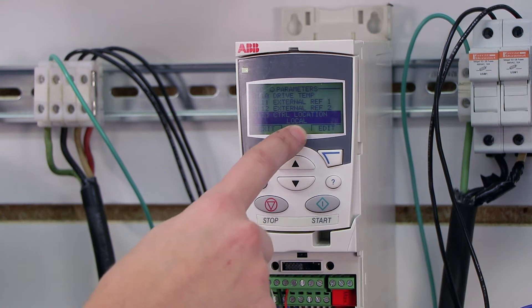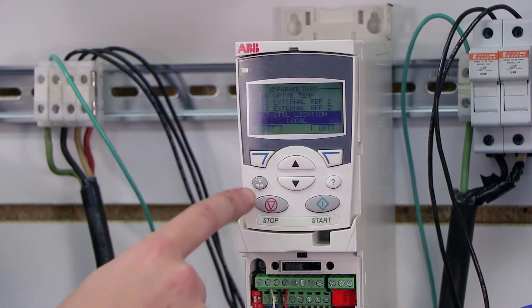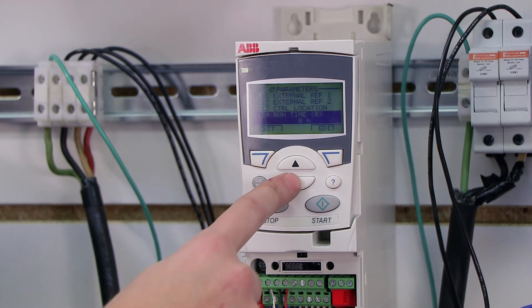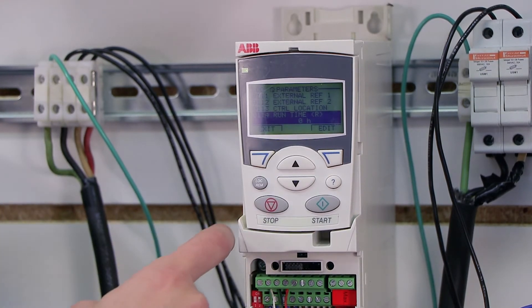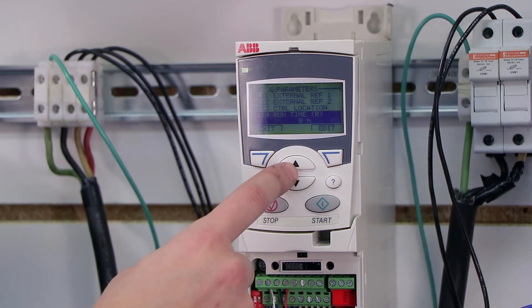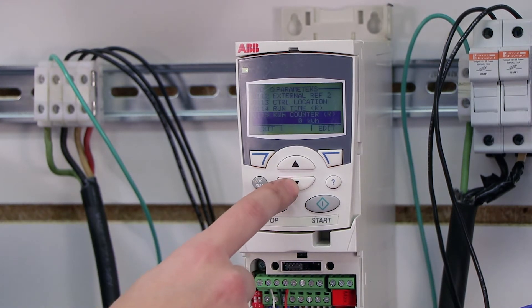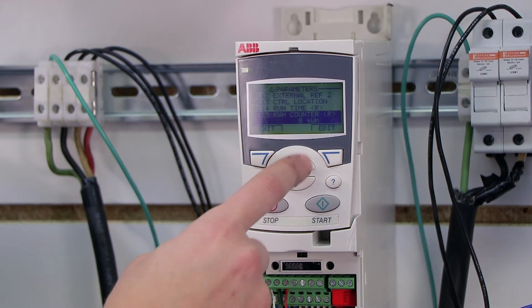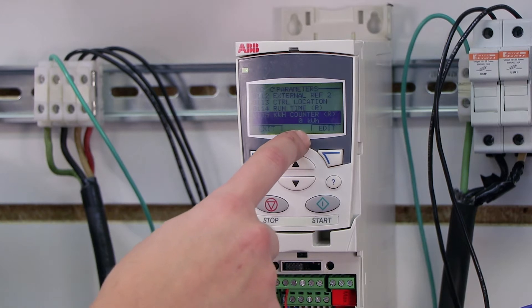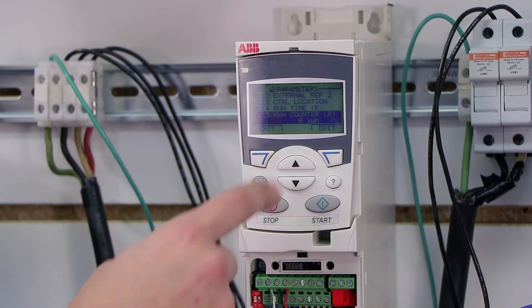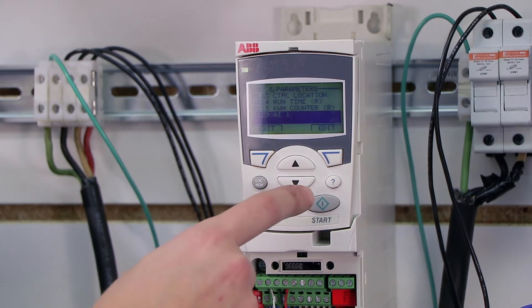And right now control location, it tells me I'm in local control, which I can actually toggle between local and remote using this push button here. Runtime, this tells you how long the drive's been running without actually stopping or shutting down. Kilowatt per hour counter, you can actually monitor your kilowatt per hour usage. This will help you decide how much energy savings you're actually generating.